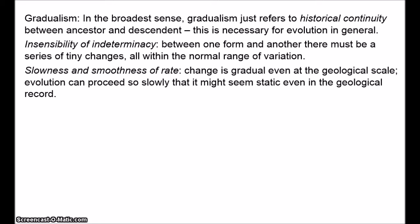Some of Darwin's most significant errors derived from his commitment to gradualism in this third sense. For instance, he calculated the denudation of the Weald Basin based on current rates of erosion as occurring over 300 million years ago — it was probably closer to about 60 million. Similarly, he predicted that the Cambrian explosion was an artefact of the fossil record and that complex animals lived for hundreds of millions of years before the Cambrian. We may debate the size and significance of the Cambrian explosion, but complex life certainly wasn't around for millions of years before that. Darwin was absolutely committed to gradualism in a very strong sense.